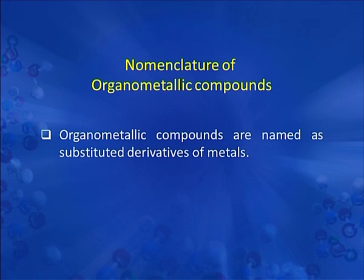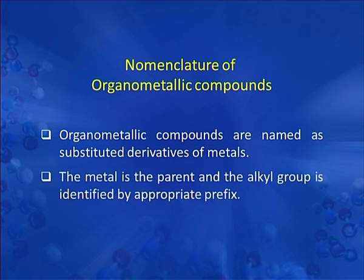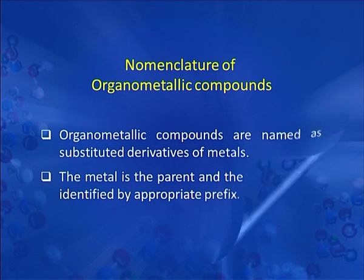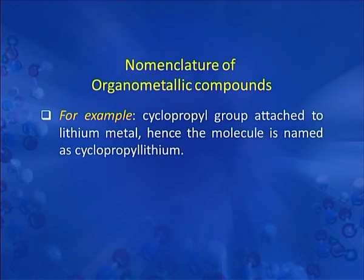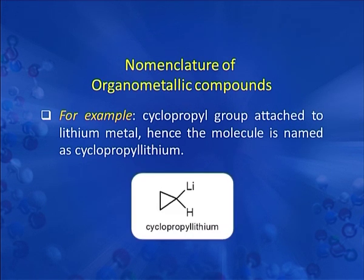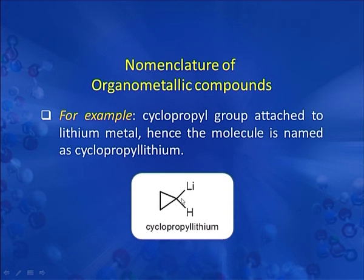We will discuss the nomenclature of organometallic compounds in general. Organometallic compounds are named as substituted derivatives of metals — the metal is the parent and the alkyl group is identified by the appropriate prefix. For example, a cyclopropyl group attached to lithium metal gives the molecule the name cyclopropyl lithium.